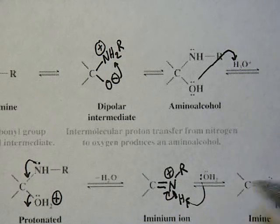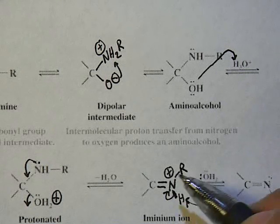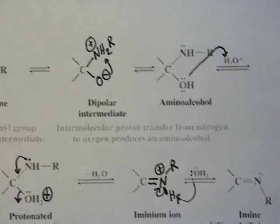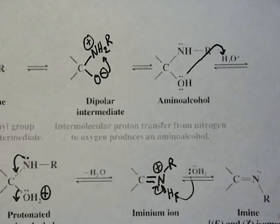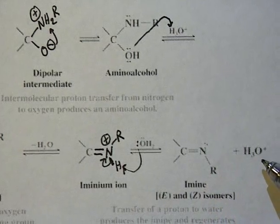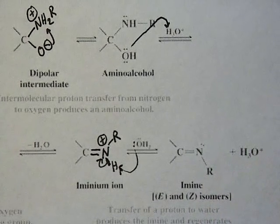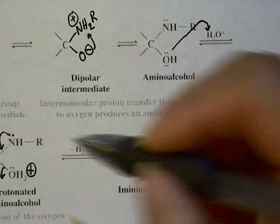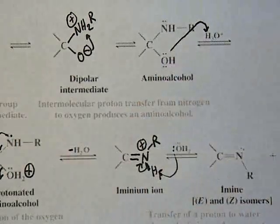The extra proton that's on the nitrogen is going to be extracted to reform the acid catalyst and give back the lone pair to form the imine. Obviously you're going to have E and Z isomers of this, and notice the acid being regenerated.